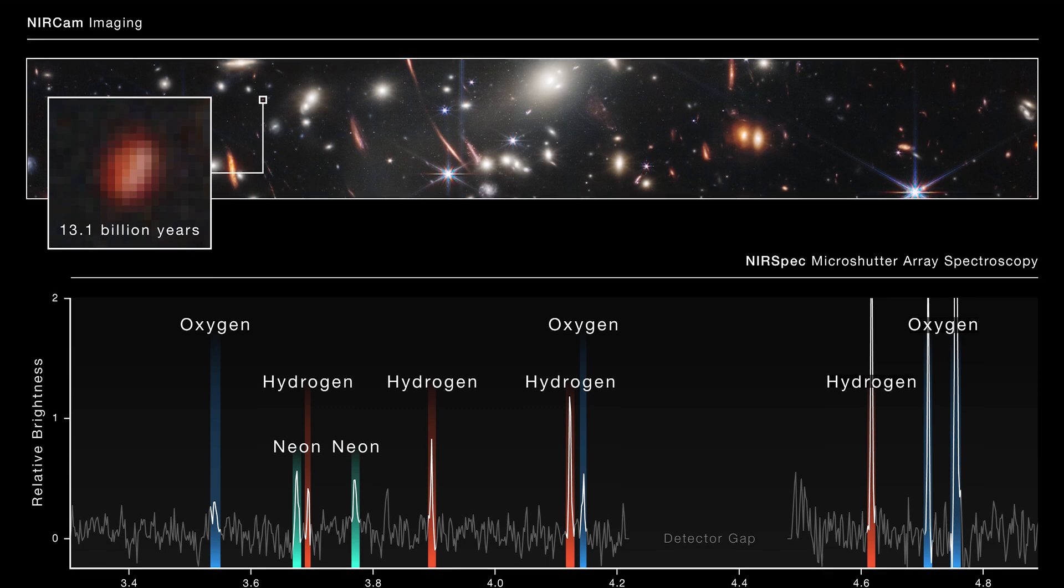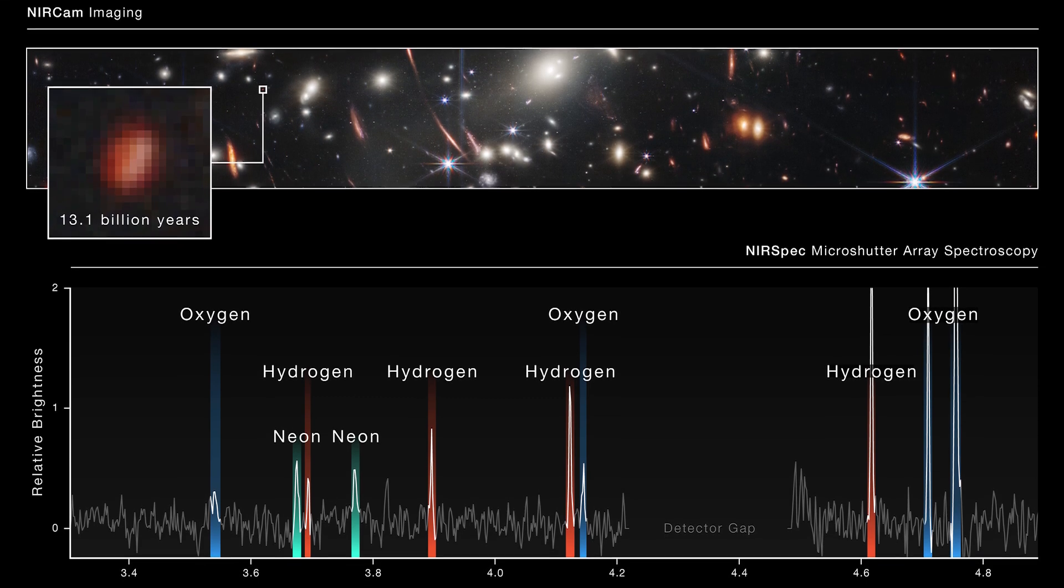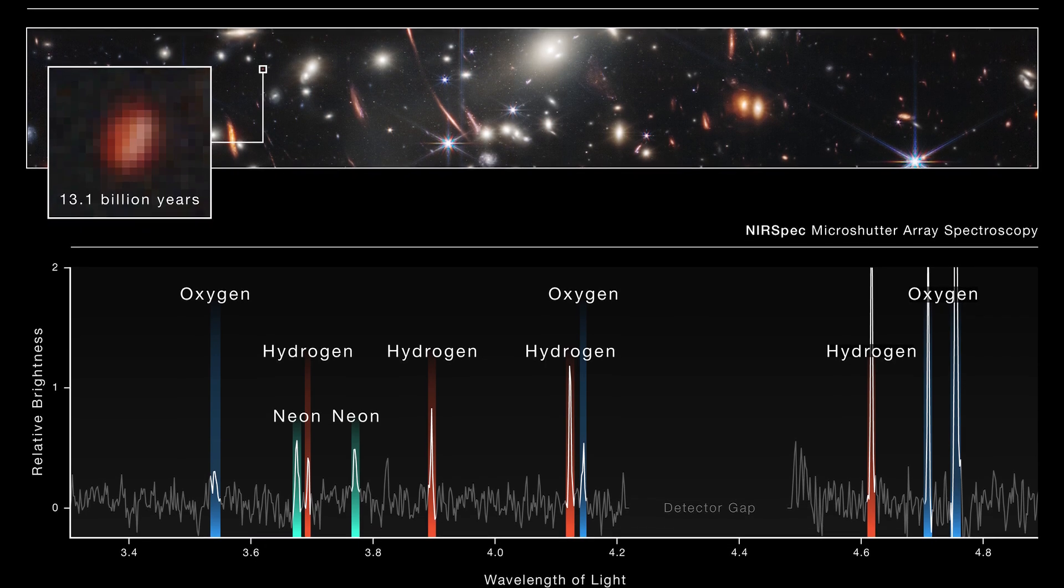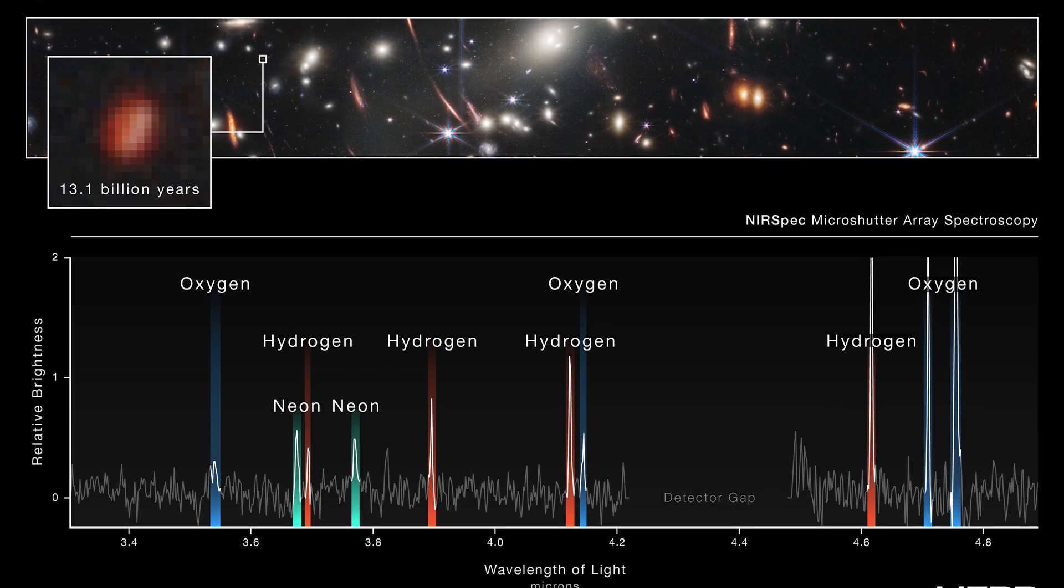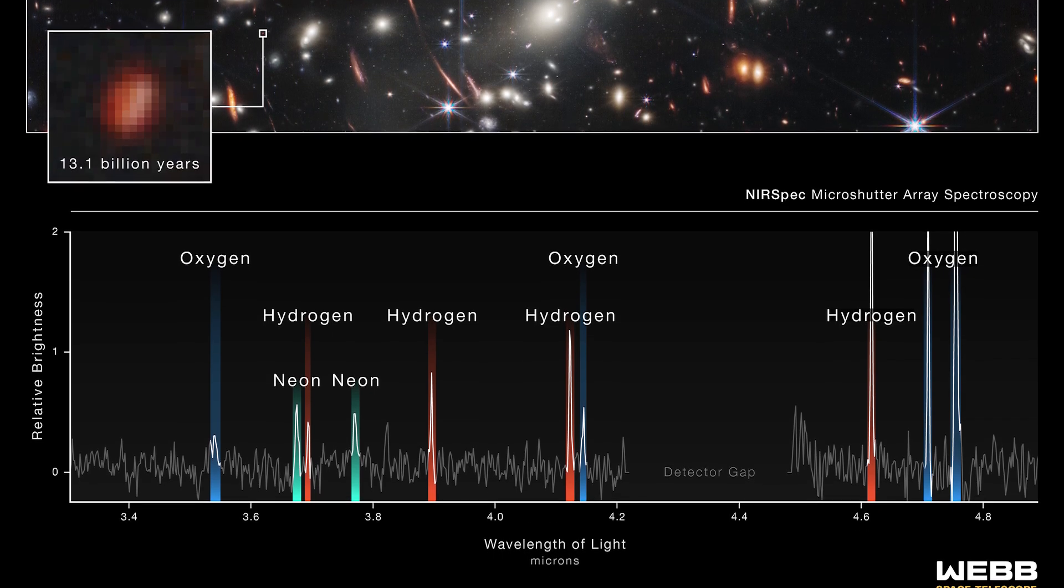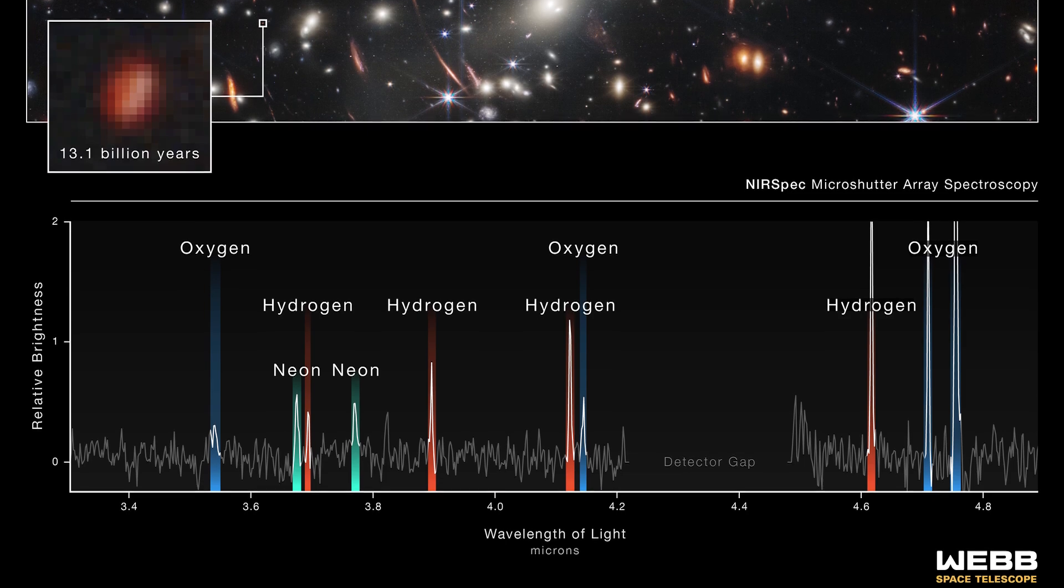Webb has also for the first time revealed to us the chemical makeup of the galaxies in the very early cosmos in the spectrum. The telescope's location in orbit far from Earth's atmosphere, which blocked some infrared light, and its expertise in capturing high-resolution near infrared light made this feasible.